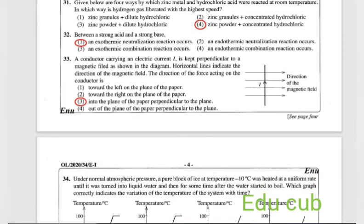Question 33: a conductor carrying electric current I is kept perpendicular to the magnetic field as shown in the diagram. Horizontal lines indicate the direction of magnetic field. The direction of force acting on the conductor is. Answer is the third one.